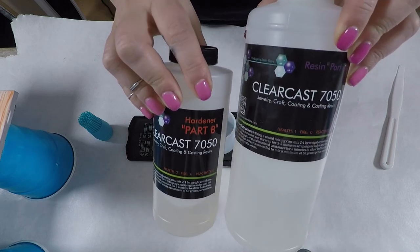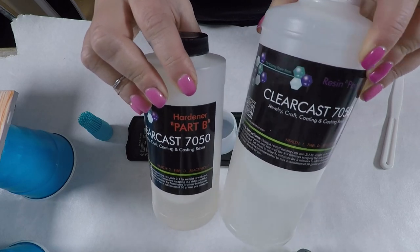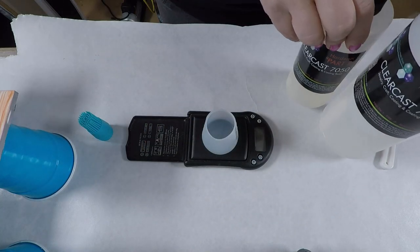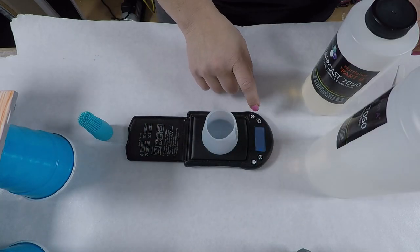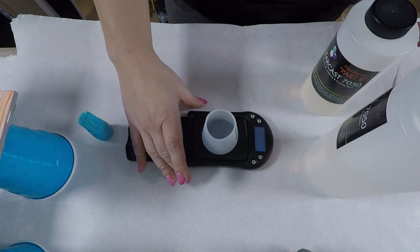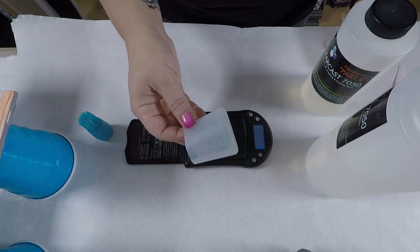The nice thing with this resin is that it can be done either by weight or volume, two to one. This little silicone cup I'm using came as a basting brush set, and I just chopped off the top to use it for measuring resin. Works great.